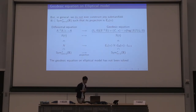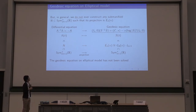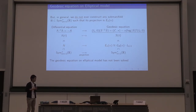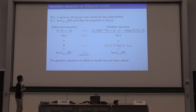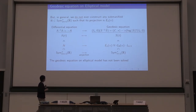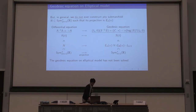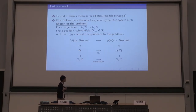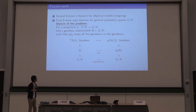But in this case, in general, we cannot construct any geodesic submanifold of E(N, alpha) such that its projection is E(N, alpha). This is a difference compared with the case of the normal model. Because we cannot construct this N, we do not have this lambda(T) to construct the geodesic on E(N, alpha) or the elliptical model. Indeed, the geodesic equation on the elliptical model has not been solved. So, as future work, I will continue to consider the extension of Eriksen's result to the elliptical model. This is ongoing.